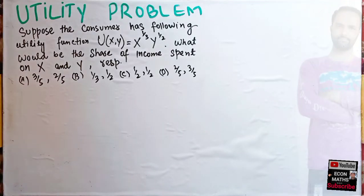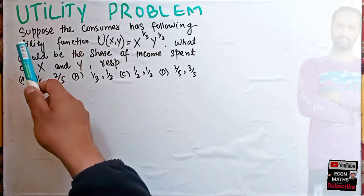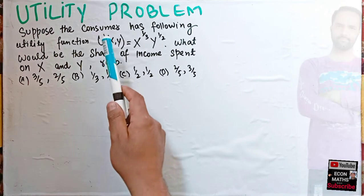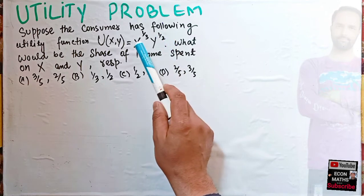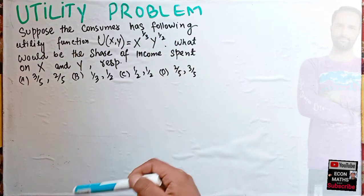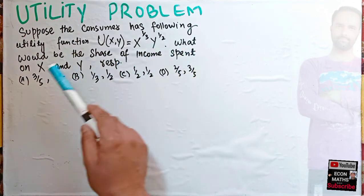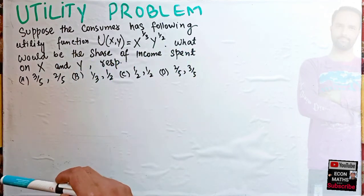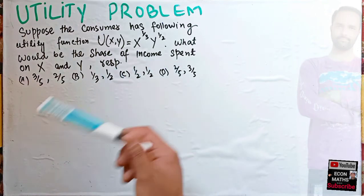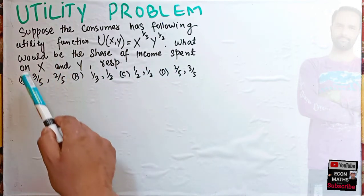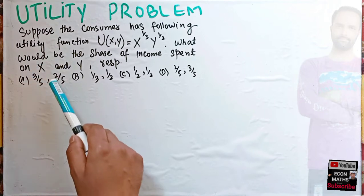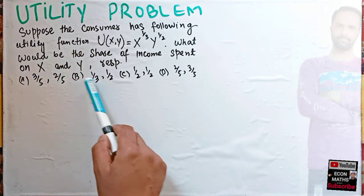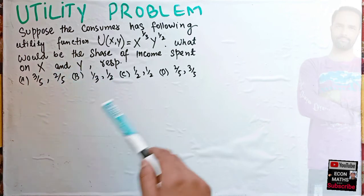Let us solve a question on a utility problem. This question was asked by a brother on the Telegram channel of economics. The question is: suppose the consumer has the following utility function U(x,y) = x^(1/3) · y^(1/2), where x and y denote the two goods. What would be the share of income spent on good x and good y respectively? One option is that the consumer spends three-fifths of income on good x and two-fifths on good y.